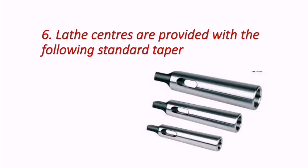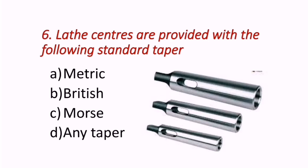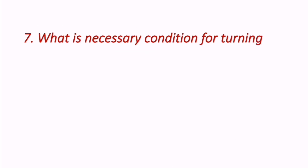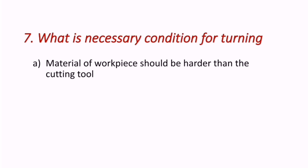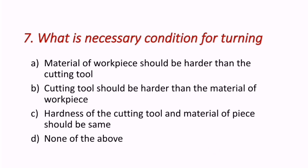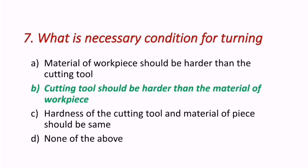Sixth question: Lathe centers are provided with which standard taper? It may be metric, British, Morse, or another taper. The correct answer is C — Morse taper for lathe centers. Seventh question: What is the necessary condition for turning? The correct answer is B — the cutting tool should be harder than the material of the work piece.